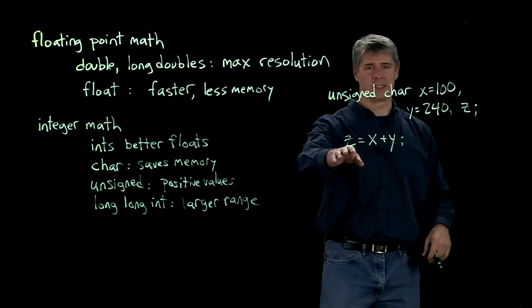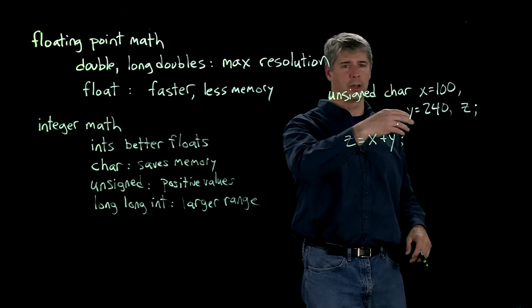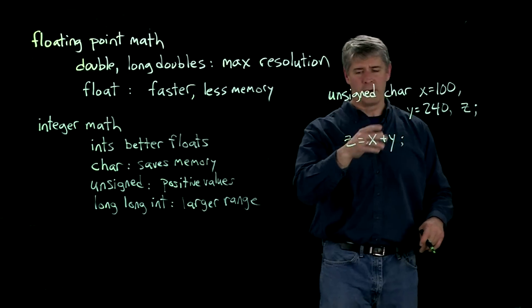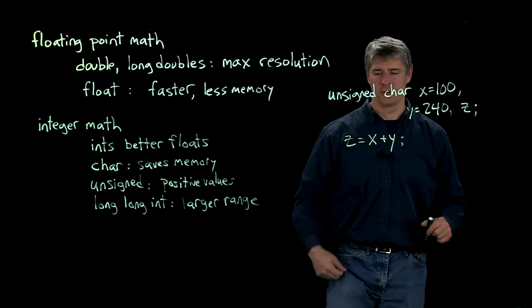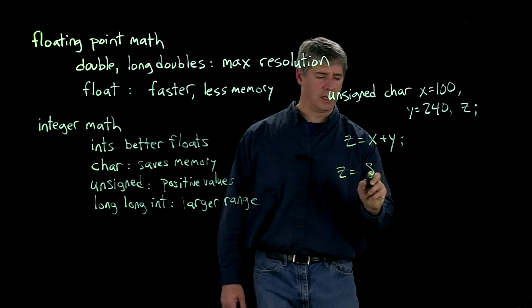The obvious thing to think is that z should have the value 340, 100 plus 240. But in fact, if you were to print out the value of z, you'd find that z is equal to 84.